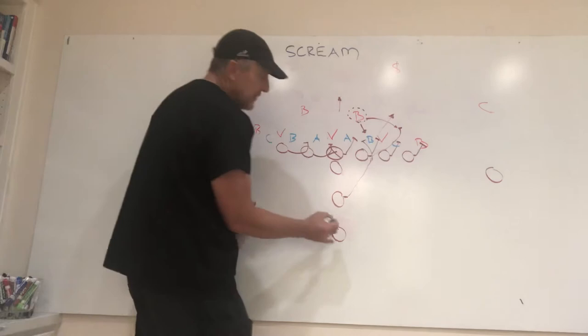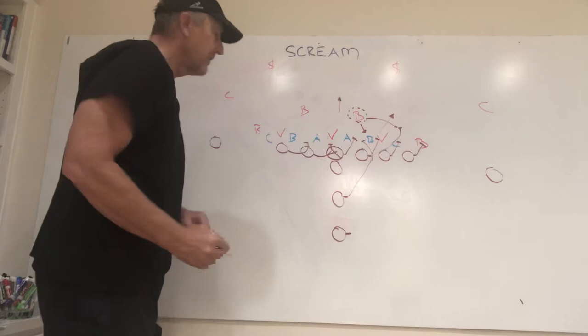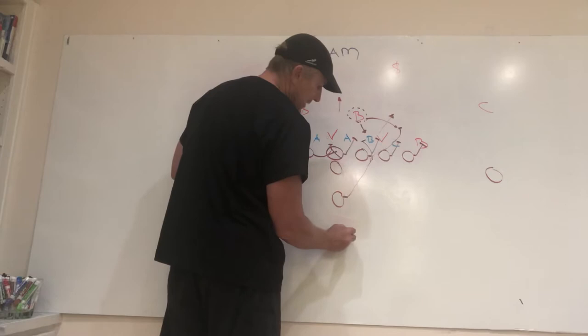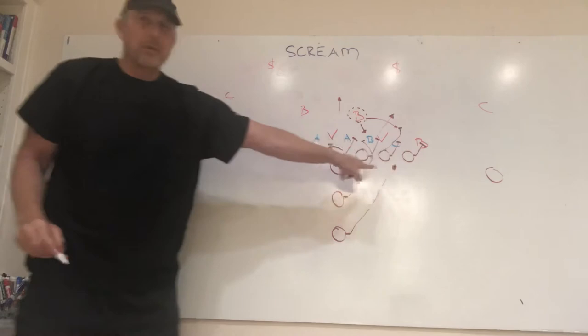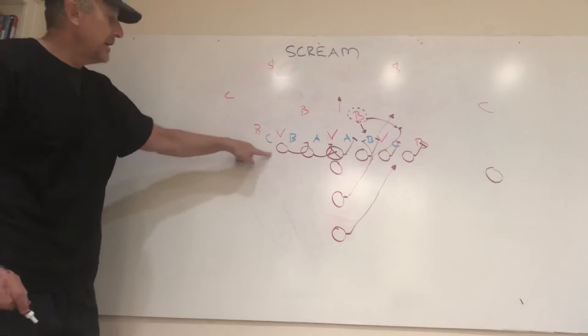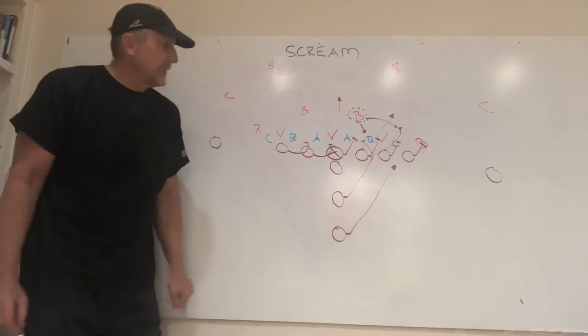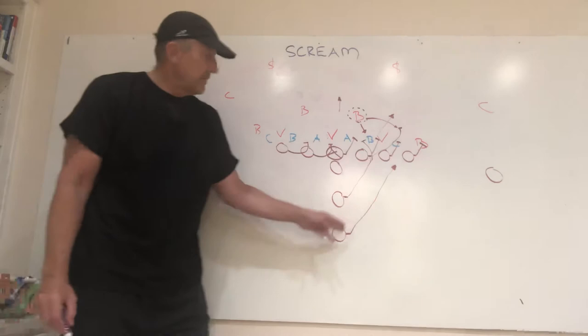We want to run it the same whether we're running to a tight end or to a split end — the skinny side — because we don't want the backfield mechanics to change and we don't want the back to have to change his reads. This is a much faster play trying to get to the edge. If our tackle is getting good movement through whoever shows up in his gap and we've secured inside, the back is just going to keep following his butt.